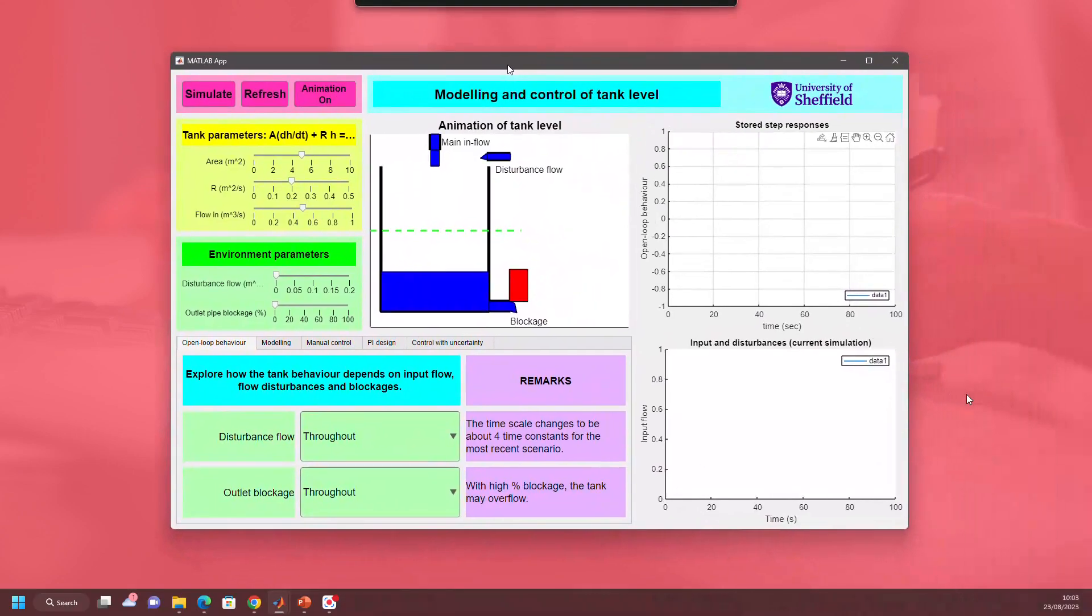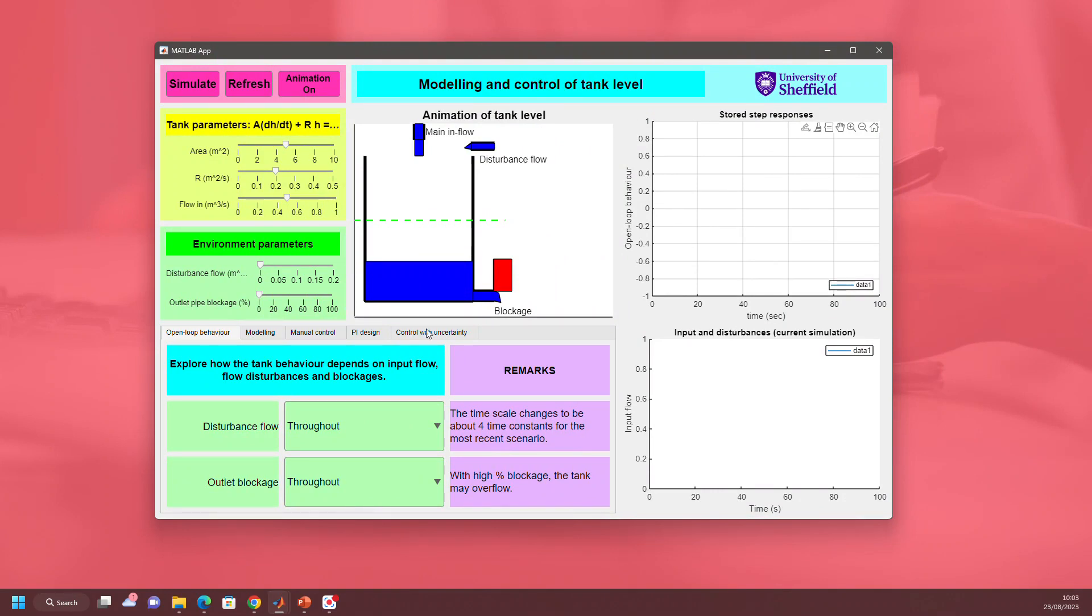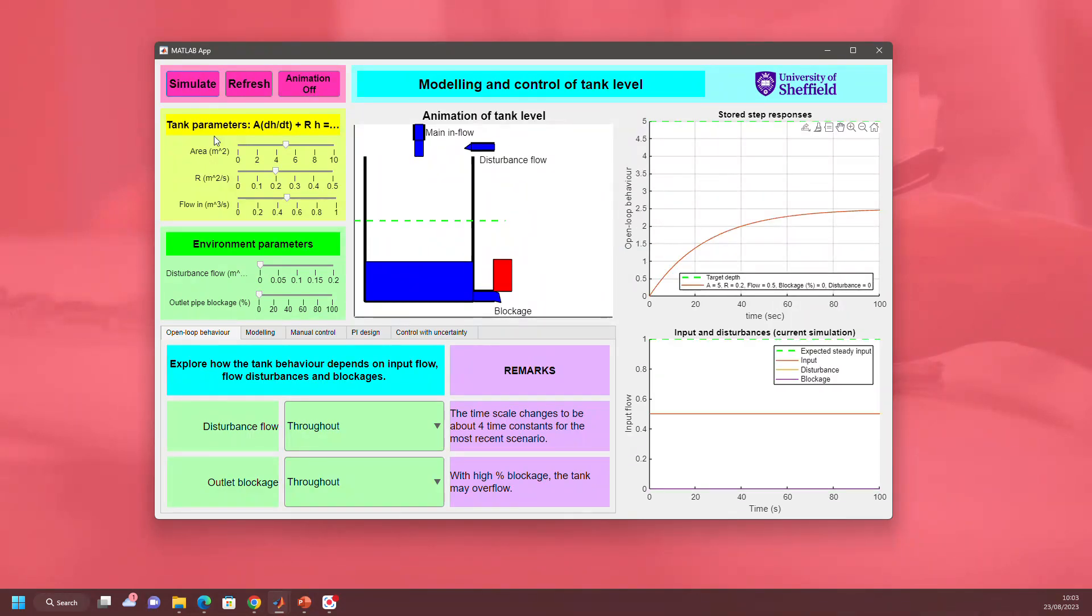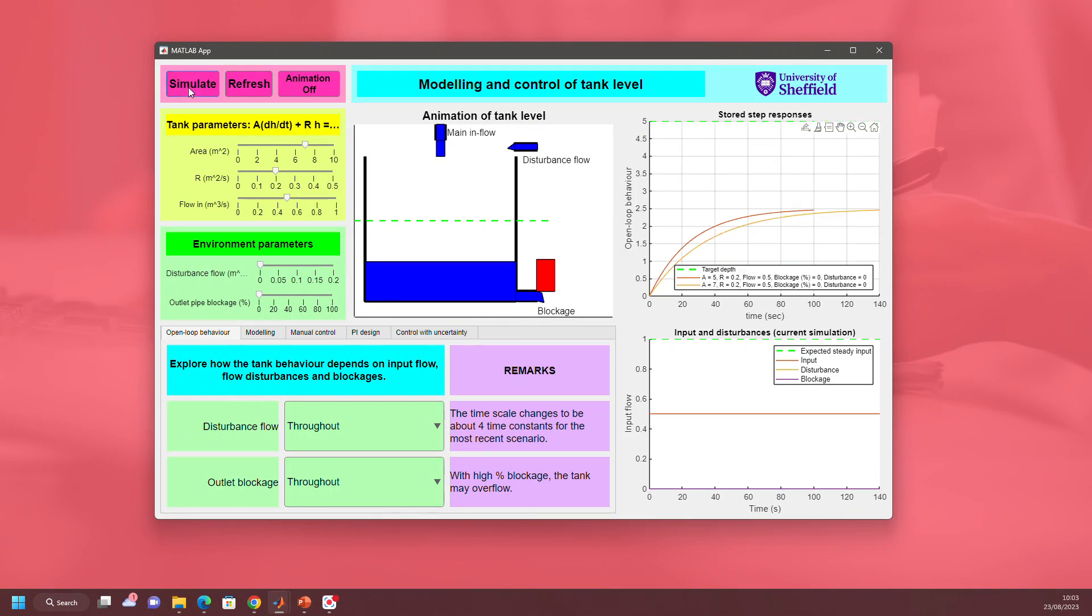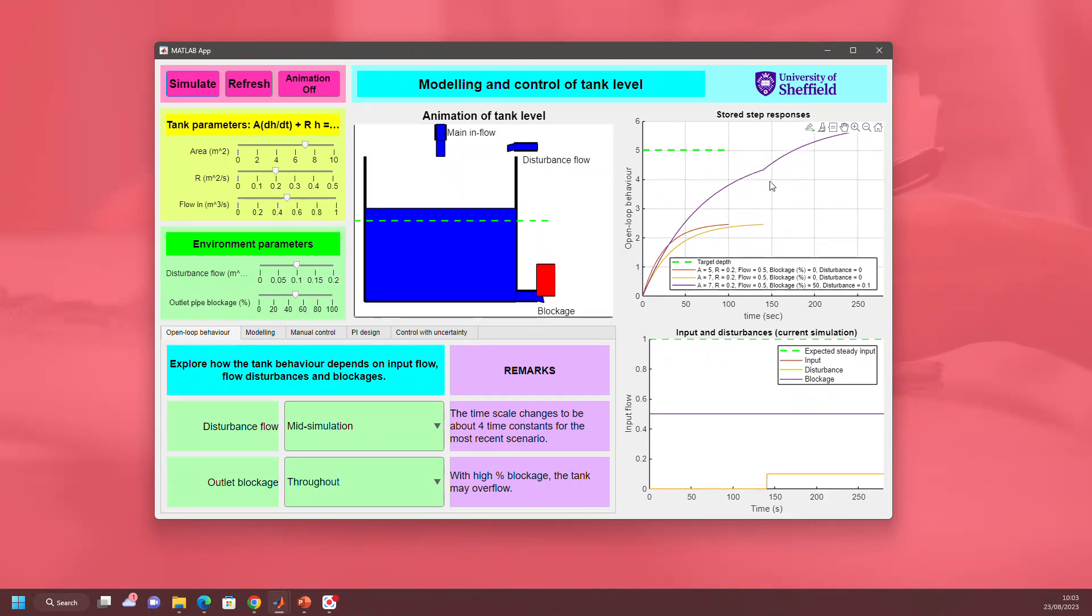Let's bring the app across. You've got these five tabs at the bottom. We start with open-loop behavior. I'll switch the animation off so we can go faster. This is like the app you saw before - you can look at what happens as you change parameters. I can have the disturbance throughout or come in mid-simulation. You'll see the impact of the disturbance with this kink in the graph. Same with the blockage - I can make the blockage come mid-simulation and see the impact. That's your open-loop behavior.